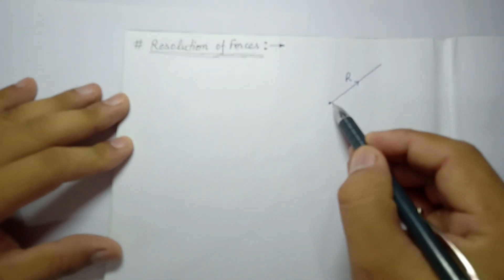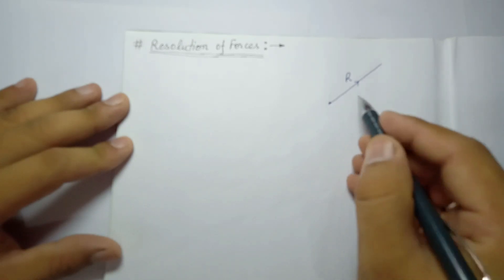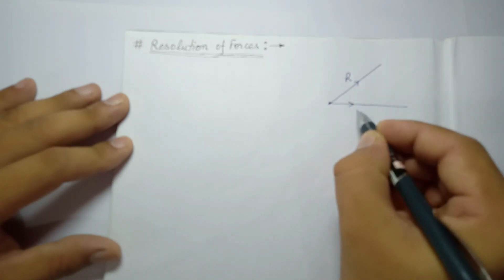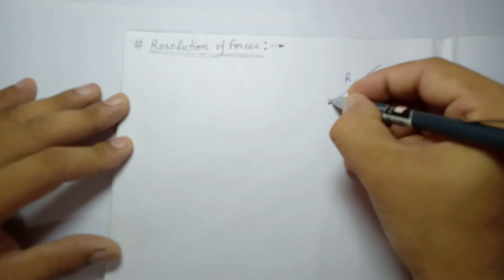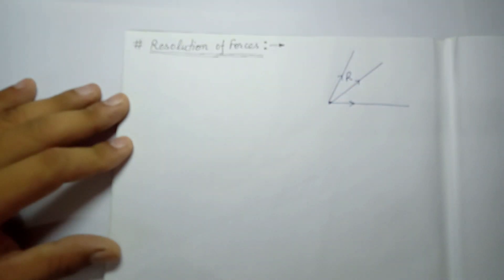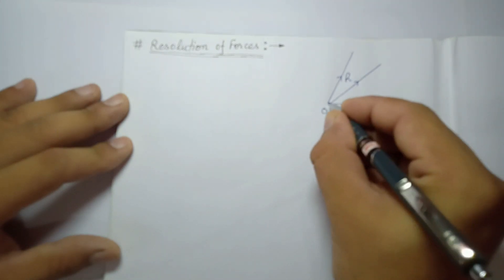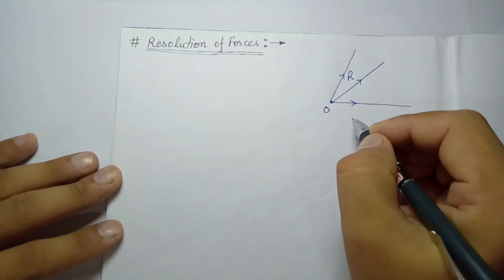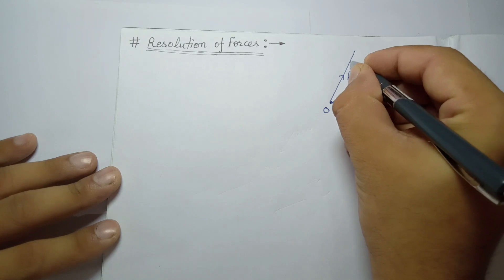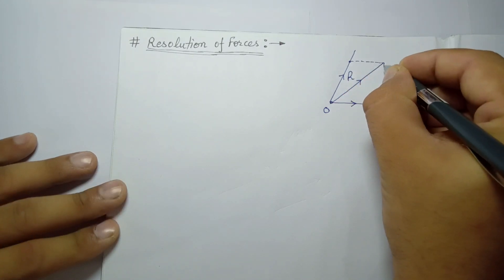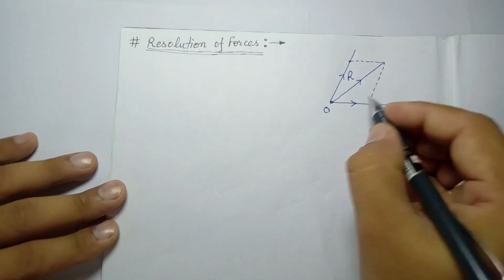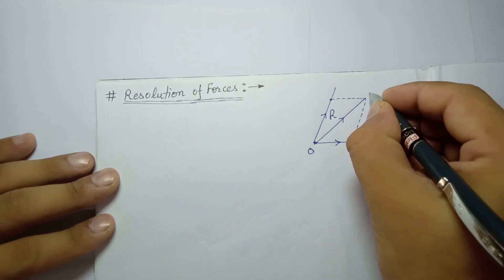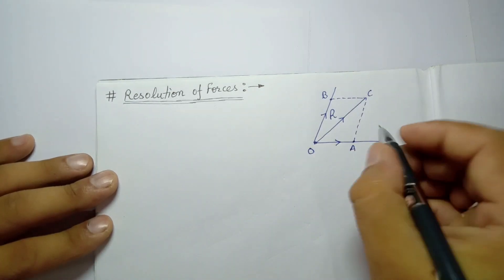Now, a given force R is there and we have to resolve it into two components. Let's say the given direction for the force is this one, and we take one more direction, this one. Now we can say this is the point of concurrency — we assume coplanar concurrent forces. Now we just close the rectangle. What we get after closing the rectangle? Now in this rectangle, we name the corners: this is O, A, C. You can name in any direction — no issue on that.